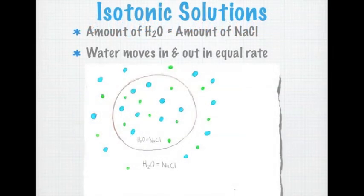First, a solution is isotonic to a cell when the solution has the same amount of dissolved particles or solutes as the cell. This allows water molecules to move in and out of a cell at an equal rate.